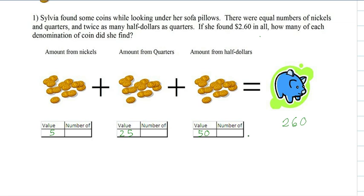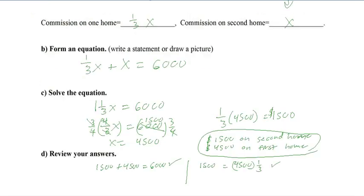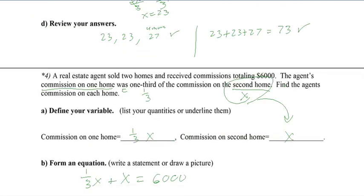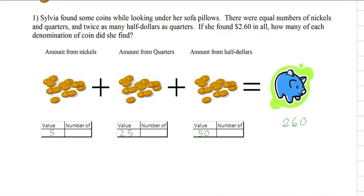There were equal numbers of nickels as quarters, twice as many half dollars as quarters. If you see quarters being used a lot, that means the quarters has to be our variable because the other two are being represented using quarters. So there were equal numbers of nickels as quarters, so that means they're the same, and twice as many half dollars. So that makes it 2x.